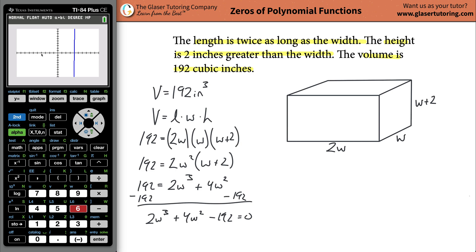You may notice now that the graph crosses the x axis, which is really the w axis in my problem. It crosses right at four. How can we make sure that is four? Go to second trace, which operates the calc function, go down, go to zero, hit enter.